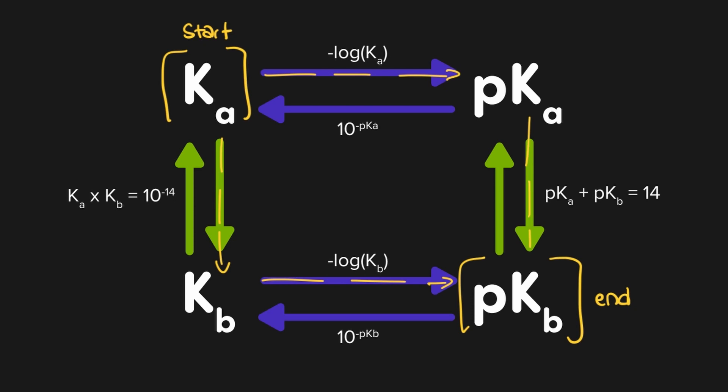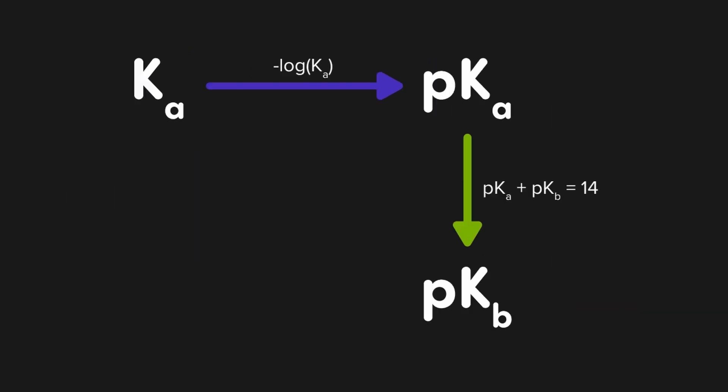While either path will work, I recommend converting between p-values whenever possible, because this avoids having to deal with exponents and is typically easier. This means our route looks something like this, with each calculation marked out above the arrow going to the next step.